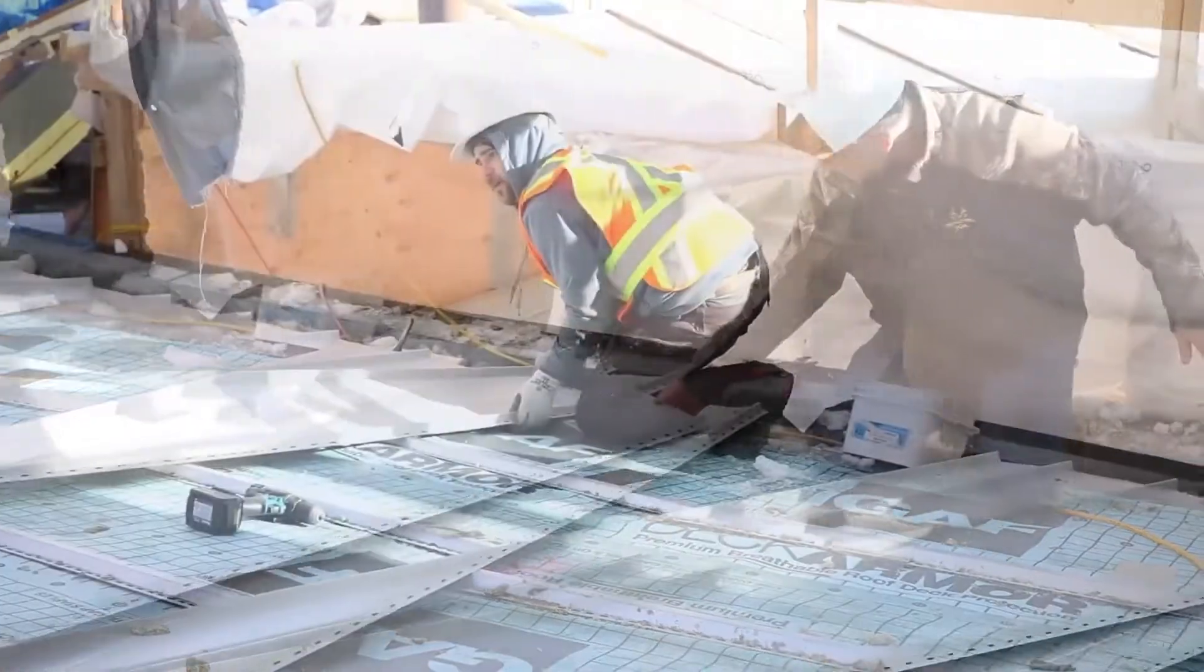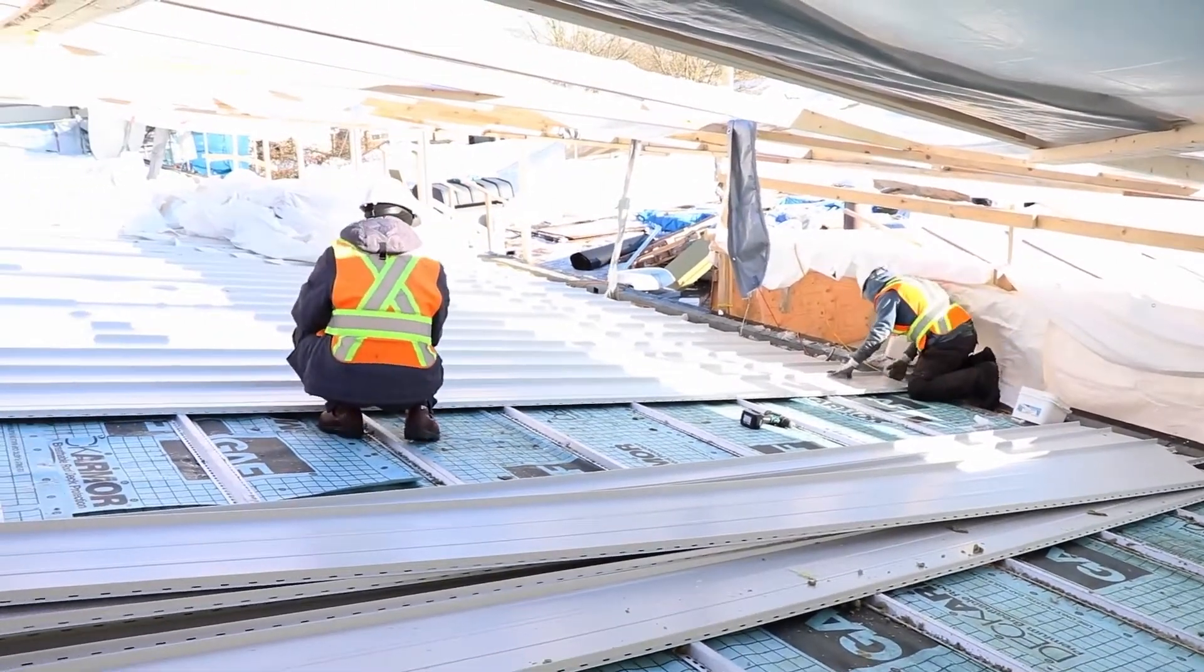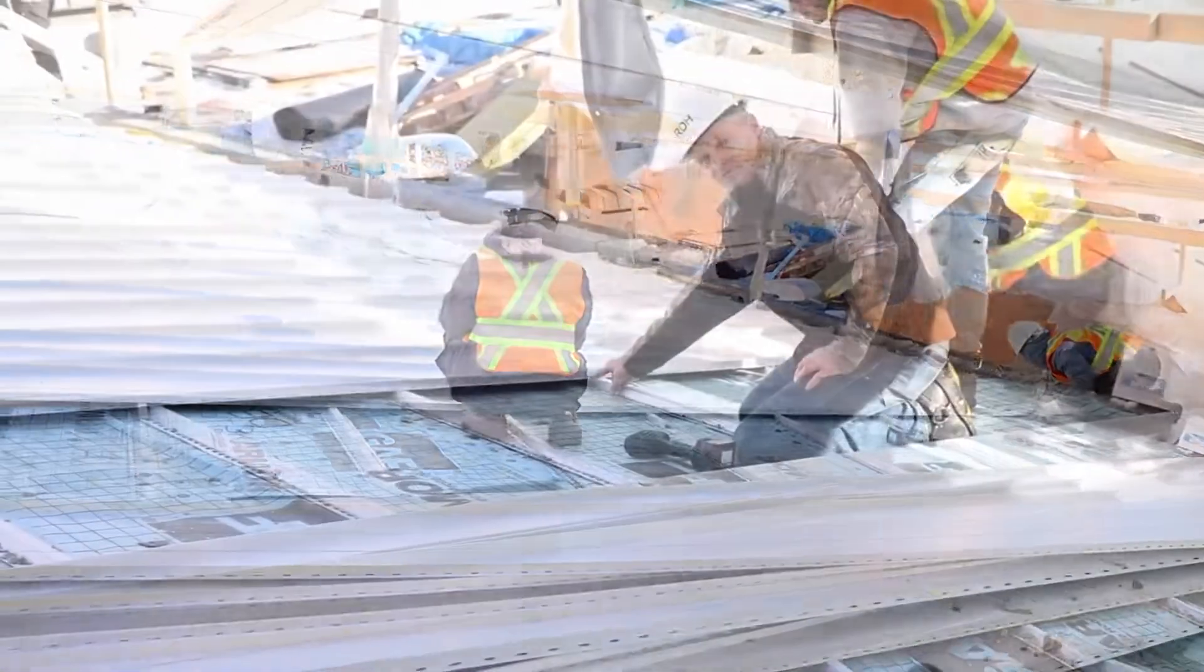Now that you have the hat tracks in place connected to your roof deck via the Cascadia clips, you can install your roof panels like you would to standard hat tracks in a normal application.